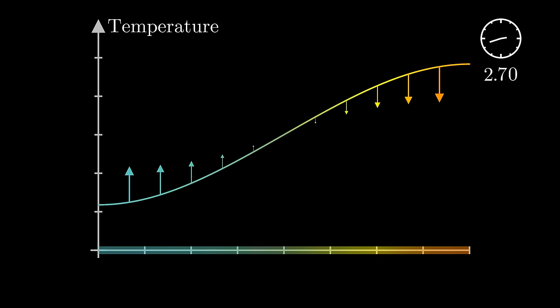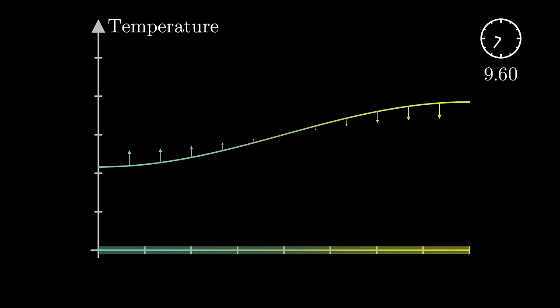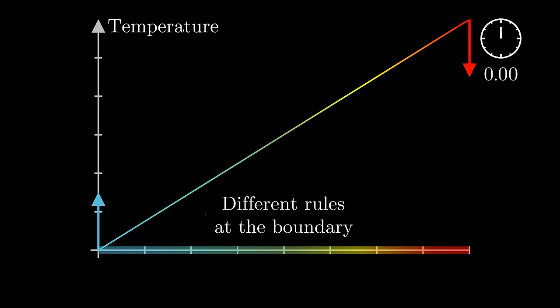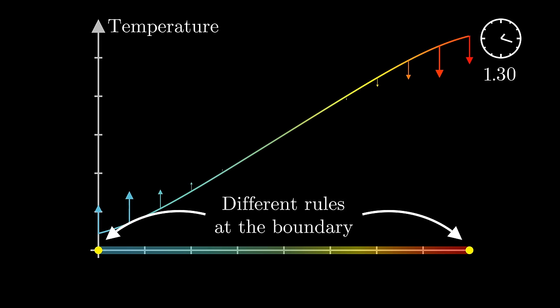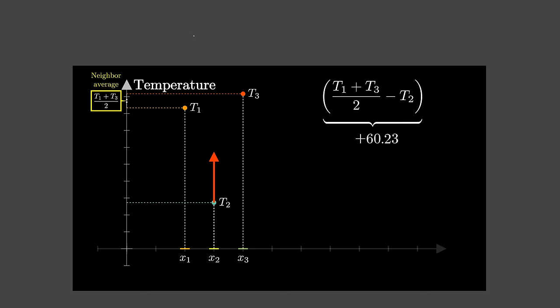And yet, if I throw this into the simulator, it does actually change over time, slowly approaching a uniform temperature at the mean value. What's going on here is that the simulation I'm using treats the two boundary points of the rod differently from how it treats all the others, which is a more accurate reflection of what would actually happen in nature.